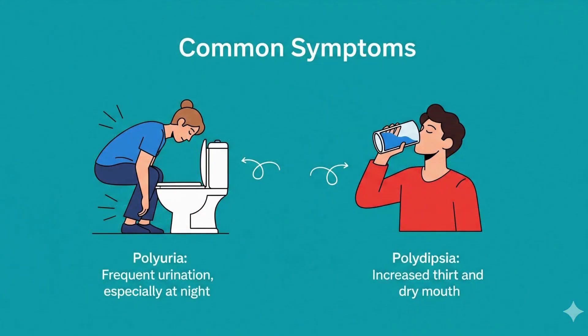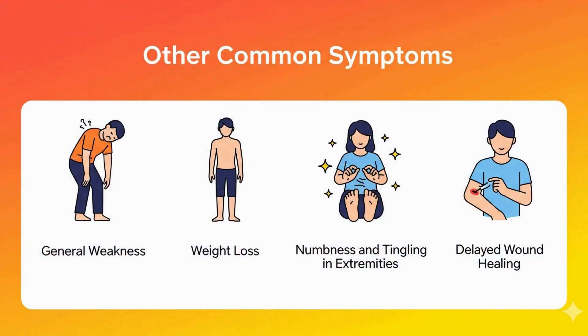The most common characteristic symptoms of diabetes mellitus are polyuria, which is the increased need for urination, in addition to polydipsia, which is the increased need for drinking water. Diabetic patients also exhibit general weakness and loss of body weight, and may also feel numbness and tingling in the extremities due to peripheral neuropathy.